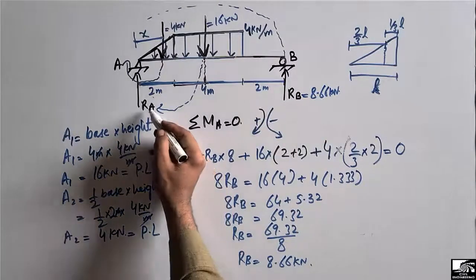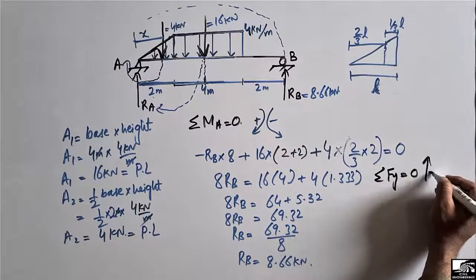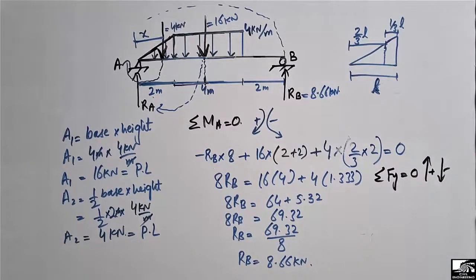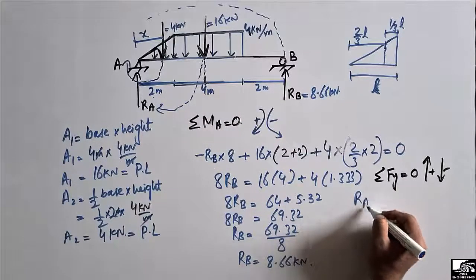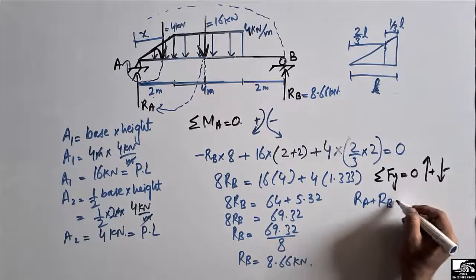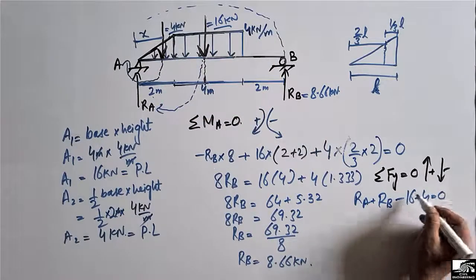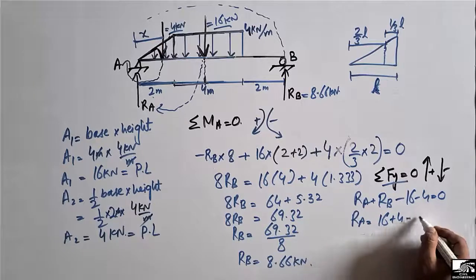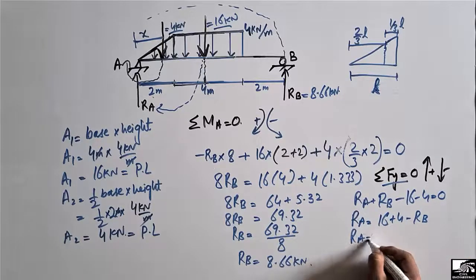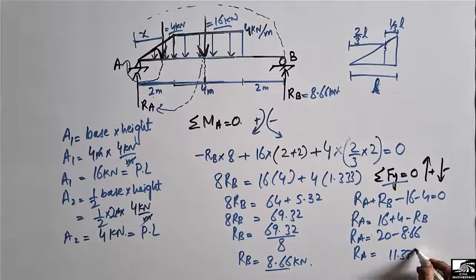To find RA, we use the summation of vertical forces equal to zero. Upward forces RA and RB are positive; downward forces of 16 kilonewtons and 4 kilonewtons are negative. So RA equals 20 minus RB, which is 20 minus 8.66, giving RA equal to 11.33 kilonewtons.